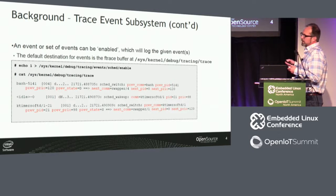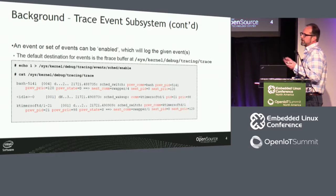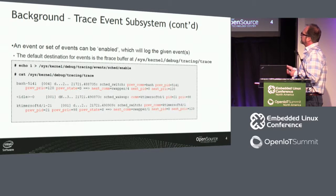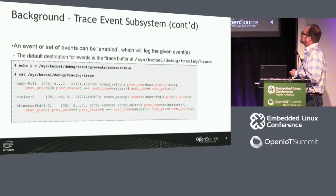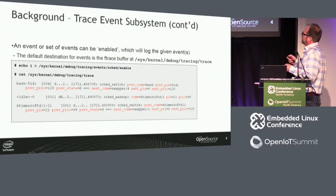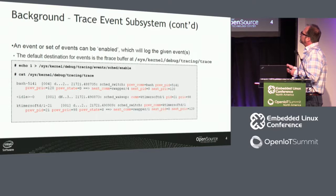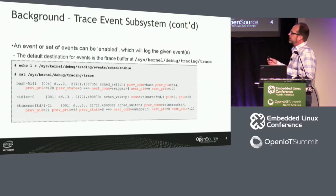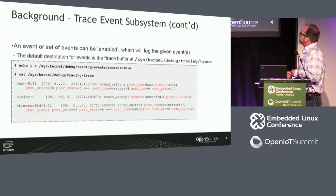Once you've done that, you look in the trace file, which is basically how you view the ftrace buffer containing the events. You'll see a whole bunch of records corresponding to the events that were logged when you enabled them. Here we have three events corresponding to two different event types — sched_switch and sched_wakeup — and I've highlighted in red that they directly correspond to the fields in the format file.